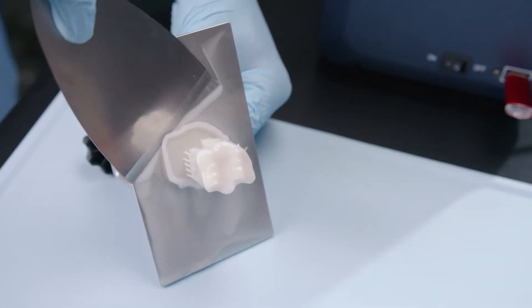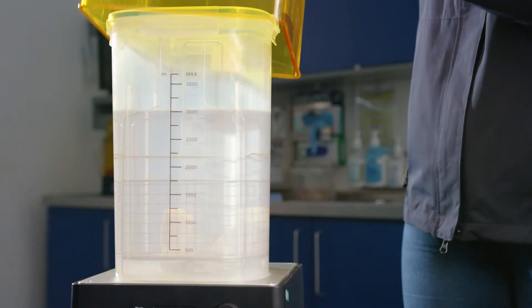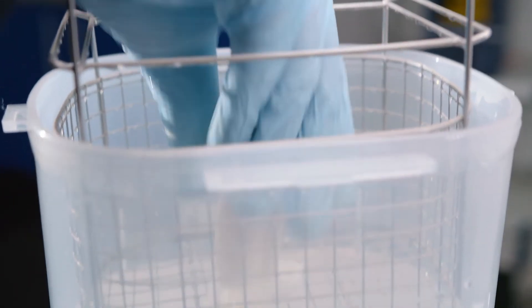The post-processing station is required for this. The corresponding container must be filled with approximately 3,000 milliliters of isopropanol 99.9%. The printed tooth can be detached from the metal base with the spatula and placed in the small metal basket in the container filled with alcohol.